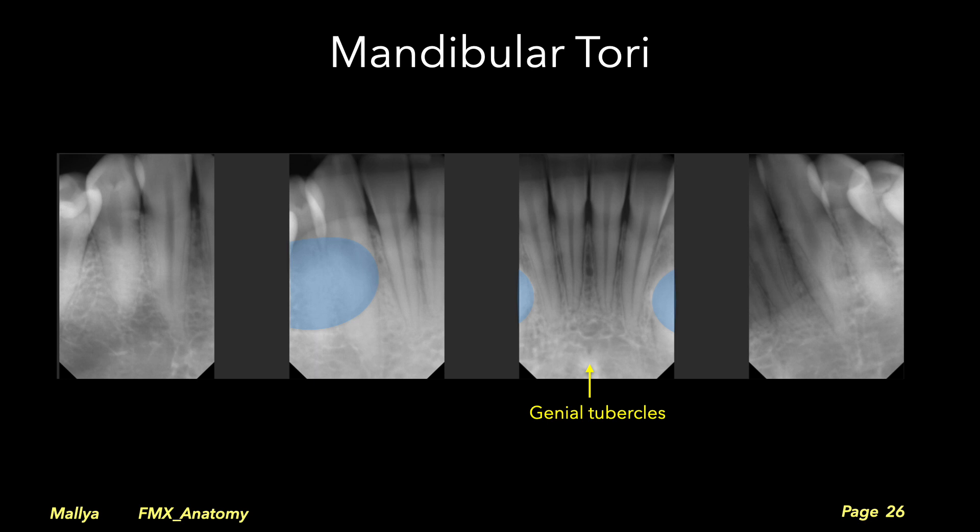Note the genial tubercles that appear as a diffuse radiopacity in the midline. You may also see the opening of the lingual foramen adjacent to the genial tubercles.